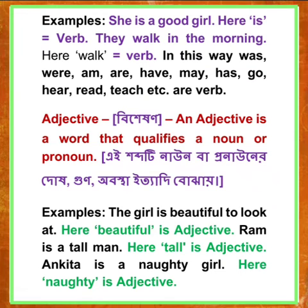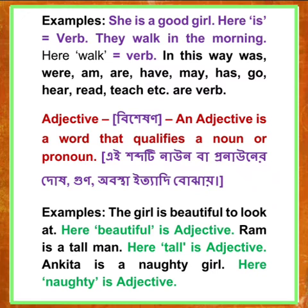Next, adjective — in Bengali 'bisheshan.' An adjective is a word that qualifies a noun or pronoun. Examples: The girl is beautiful to look at — here 'beautiful' is an adjective. Ram is a tall man — here 'tall' is an adjective. Ankita is a naughty girl — here 'naughty' is an adjective.